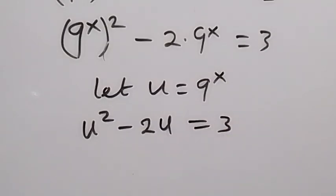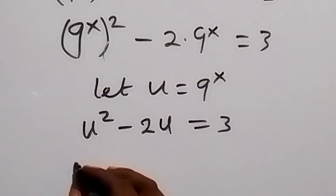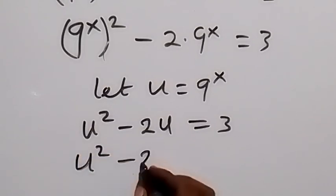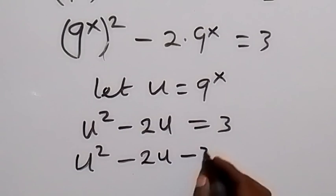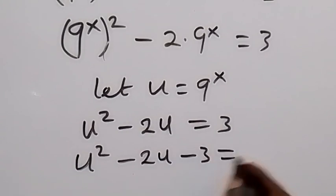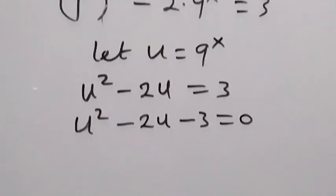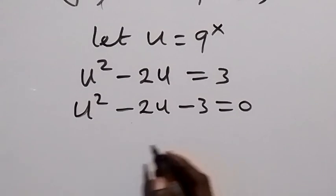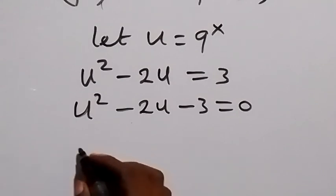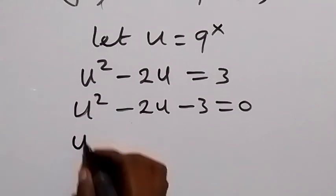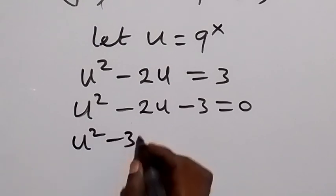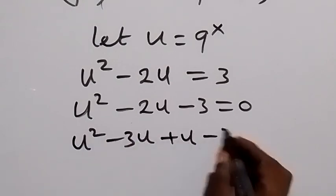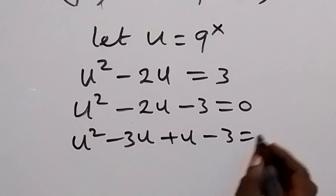Then, when we take 3 to this side, this will become u squared minus 2u minus 3 equals to 0. We can solve this quadratic equation by factorizing. When we factorize this, we have u squared minus 3u plus u minus 3 equals to 0.